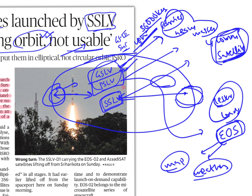Today we have a third version called SSLV — the small satellite launch vehicle. It carries even smaller ones: miniature satellites, micro satellites, nano satellites — very small ones compared to those carried by PSLV and GSLV. That is why SSLVs are built.